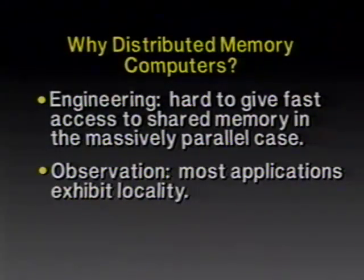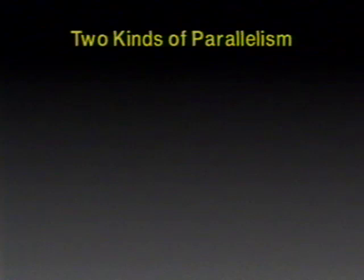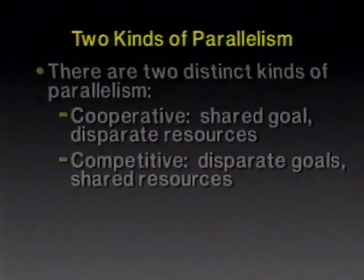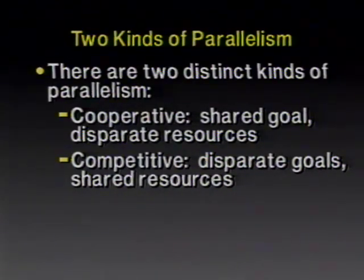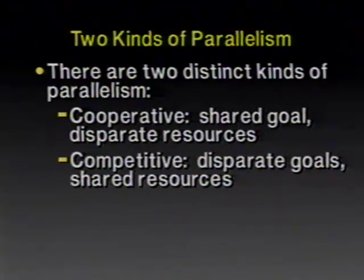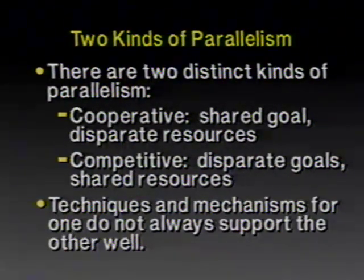Most applications can be organized so that most of the time most processors only need data in their chunk of memory. By putting each processor next to its own memory and putting the switch on the other side, you get a much more cost-effective solution for that network. But this has a consequence for software: memory access costs will be non-uniform, and programmers are going to have to grapple with that fact. There are two different kinds of parallelism — cooperative and competitive — and this distinction has not been brought out well in the literature heretofore.